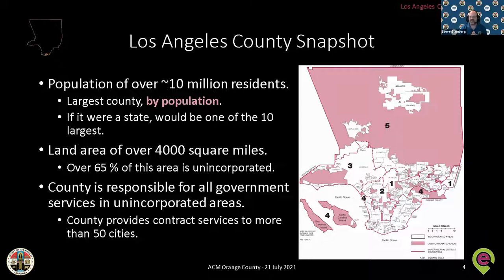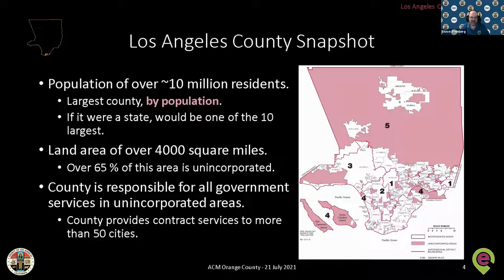LA County is big. It has over 10 million residents — the largest county in the country by population. If it were a state, it would be one of the top 10 states. It's over 4,000 square miles of land area. The areas shown in pink on the map are the unincorporated parts of the county — not incorporated cities like Los Angeles, Long Beach, or Pasadena. LA County actually has 88 incorporated cities, so we deal with a lot of interaction across government agencies. The county is responsible for all government services in the unincorporated areas and provides contract services — primarily fire and policing — to over 50 cities.